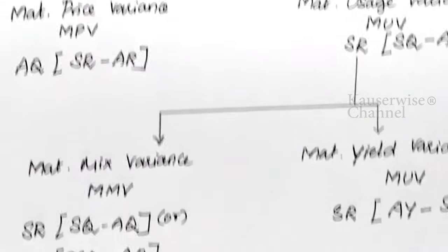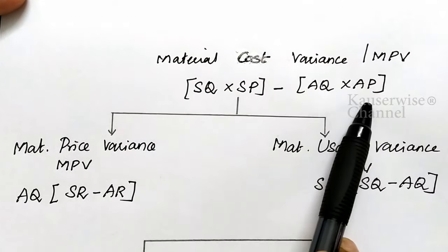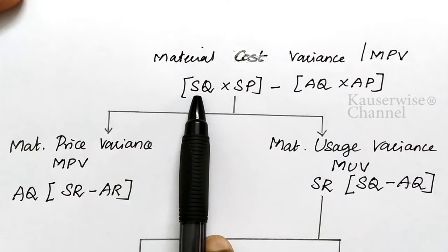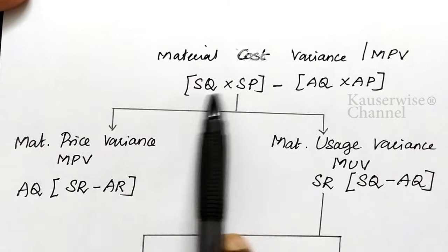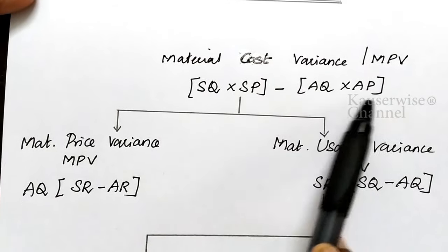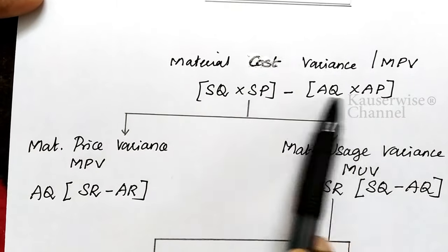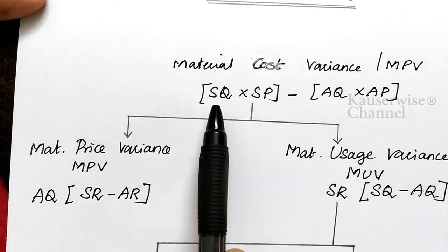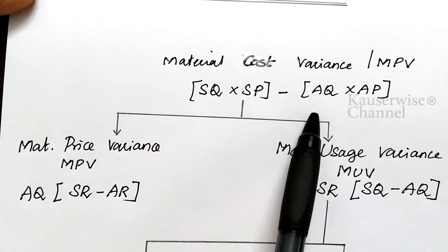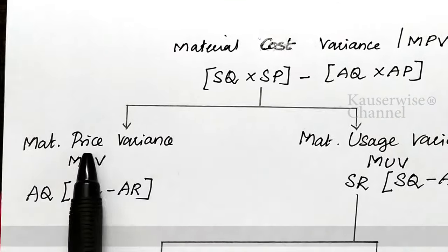Now let us see the calculation formulas. The formula for material cost variance is: standard quantity × standard price minus actual quantity × actual price. For material price variance, the formula is: actual quantity × (standard rate − actual rate) — find the difference between standard rate and actual rate, then multiply by actual quantity.